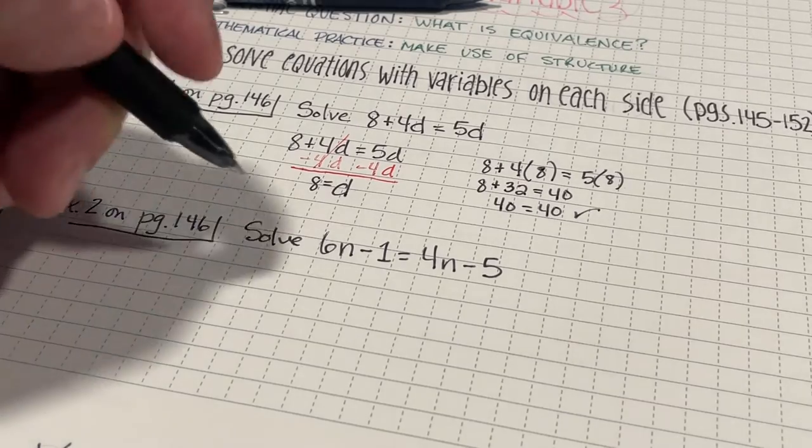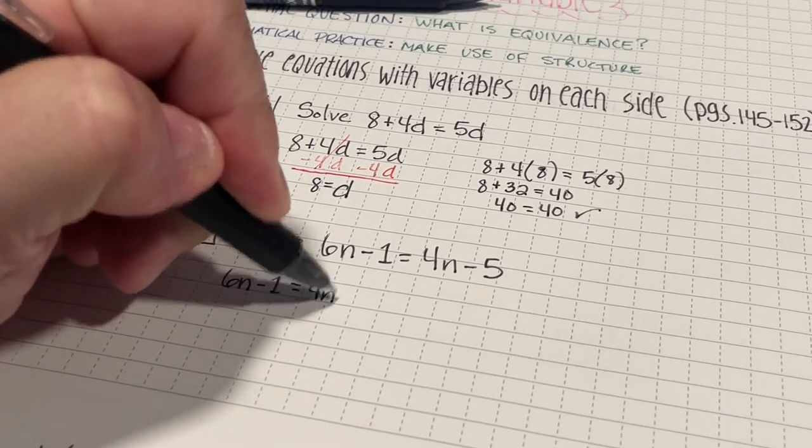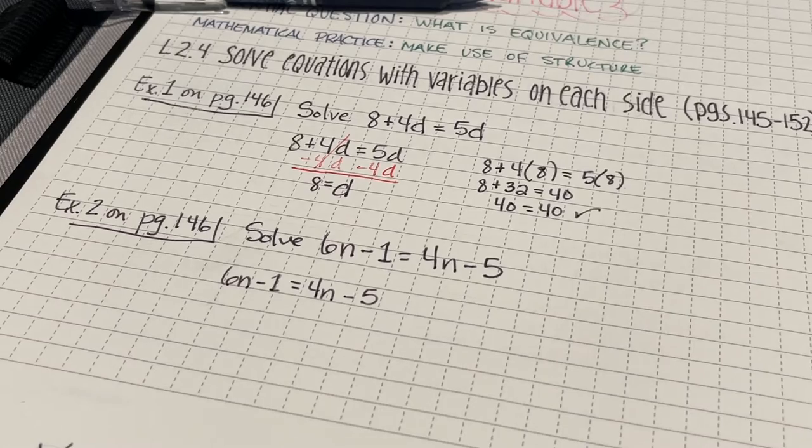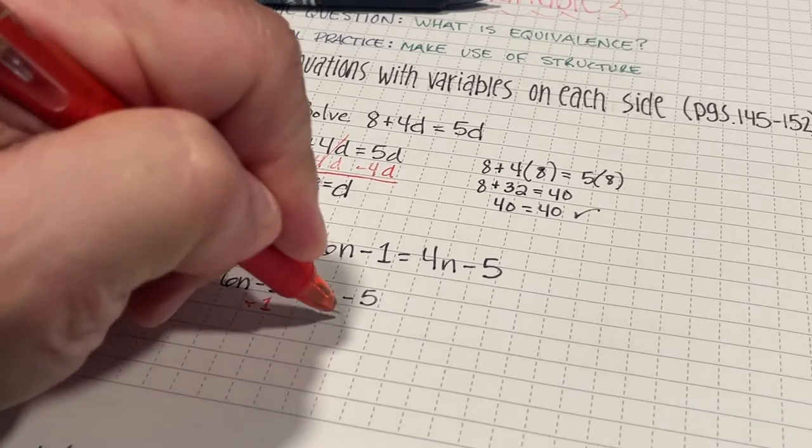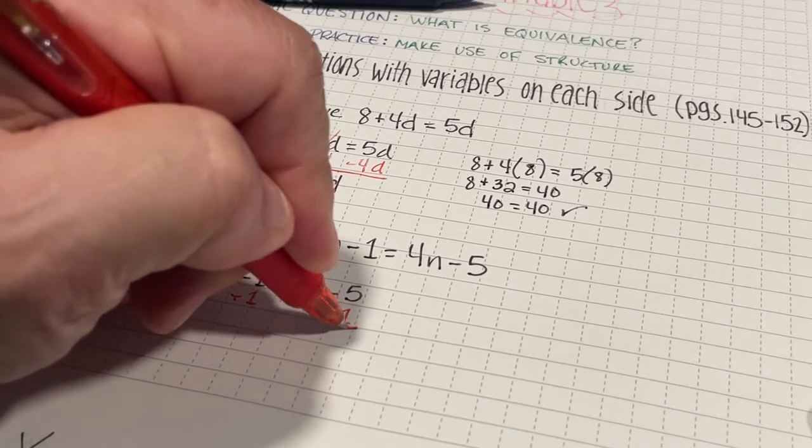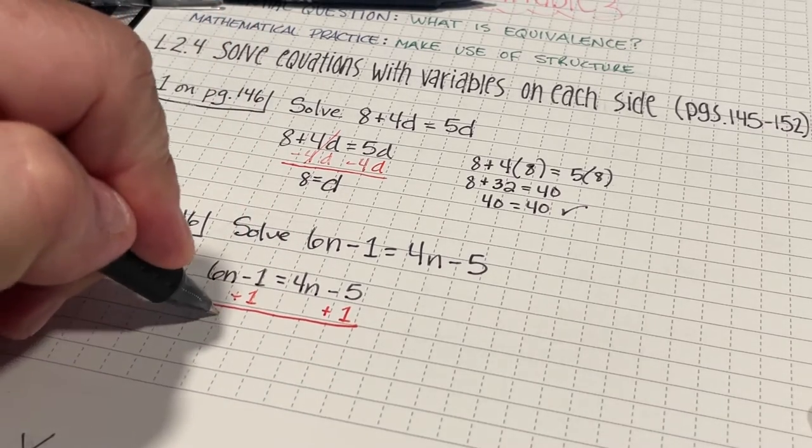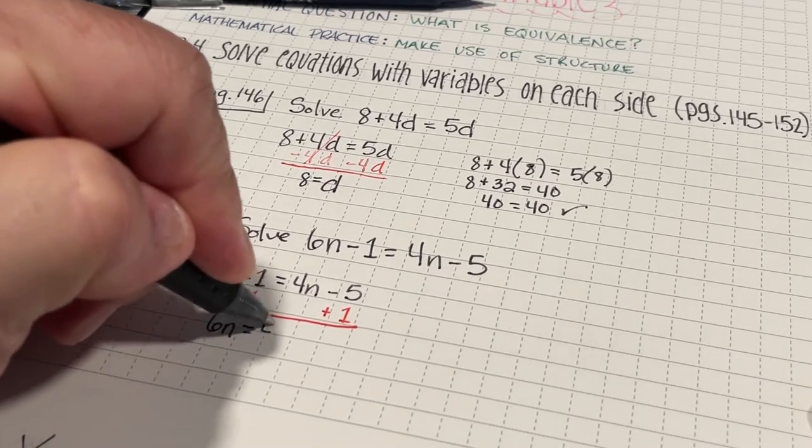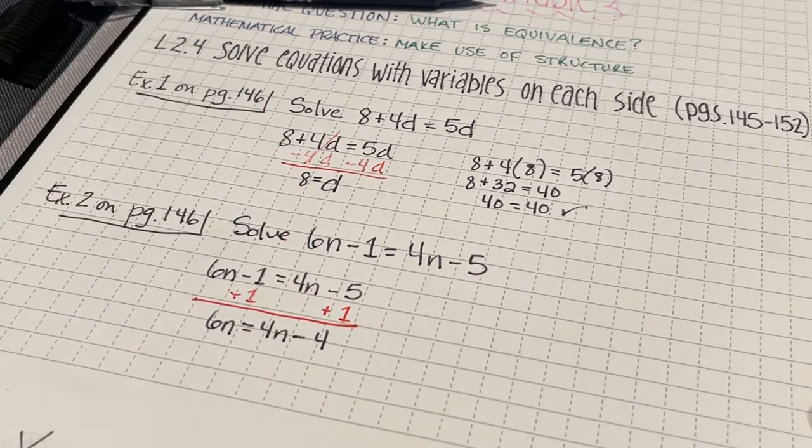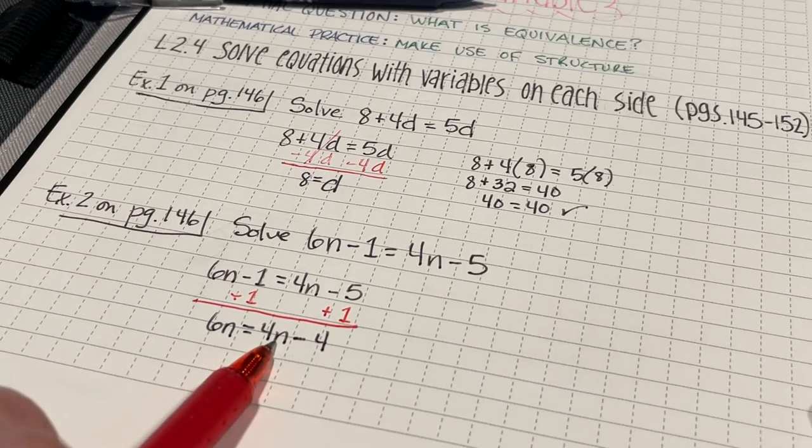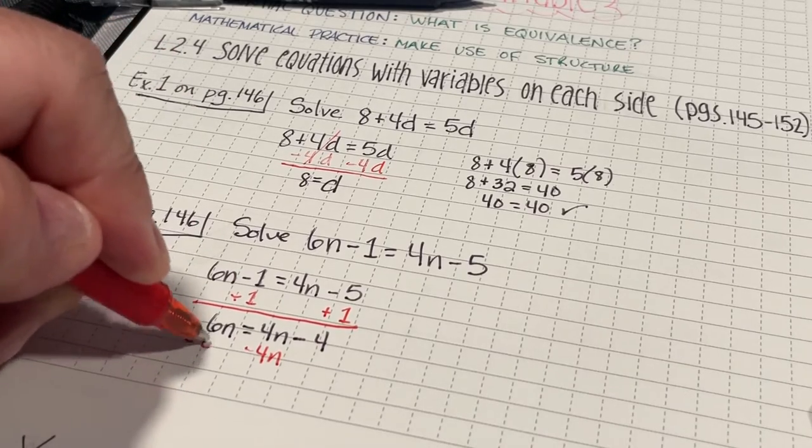Okay. 6n minus 1 equals 4n minus 5. I think this time what I'm going to do is I'm going to add 1 to both sides. That way, I can get rid of the negative 1. So, now I'll have 6n equals 4n minus negative 5 plus 1 should be negative 4. Now, what I'm going to do is I'm going to get this 4n over to the other side of the equation. So, I'm going to subtract 4n on both sides.